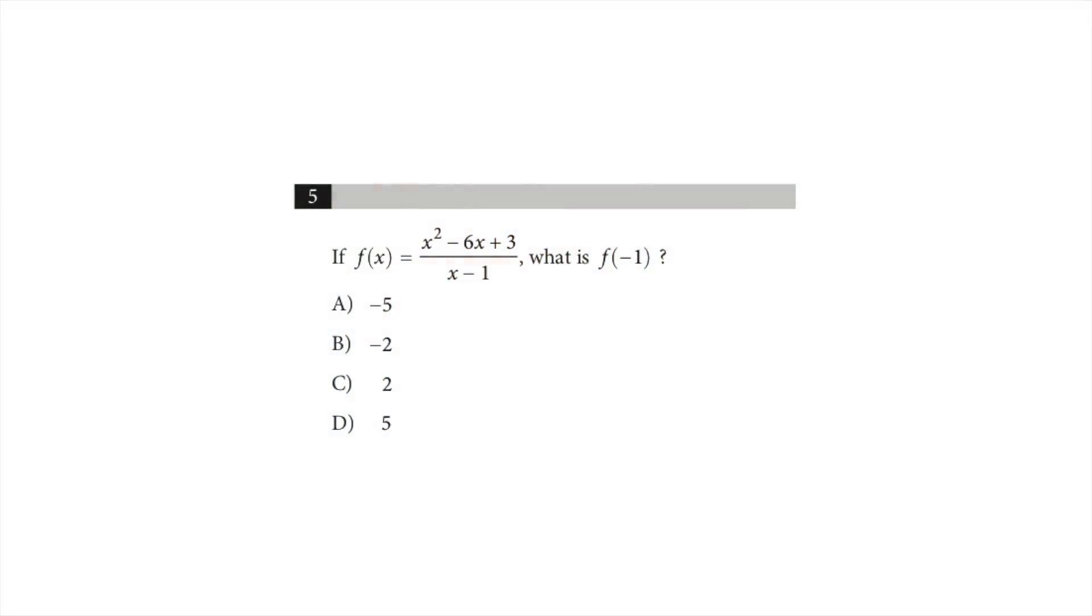Problem number five. If f of x equals this rational function, a ratio of two polynomials, then what is f of minus one?